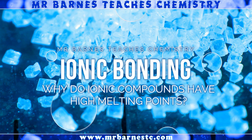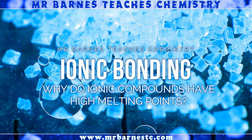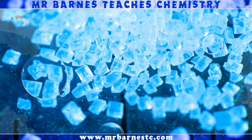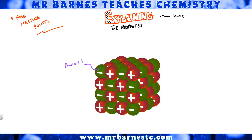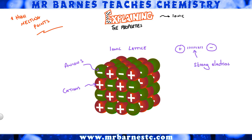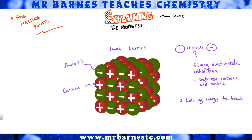So let's get back to the point of this video: why do ionic compounds have high melting points? We have our anions and cations — our positive and negative ions — surrounding each other, forming an ionic lattice. The thing that gives ionic compounds a high melting point is the strong electrostatic attraction between those cations and anions. That gets you two marks in an exam. The third mark is for saying that lots of energy is needed to break that strong electrostatic attraction — therefore they have a high melting point.